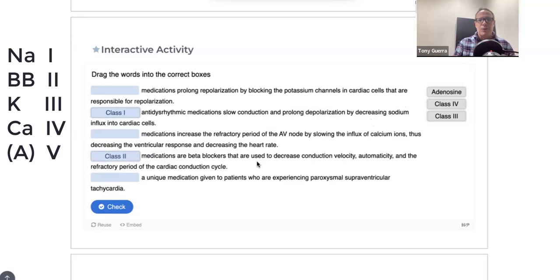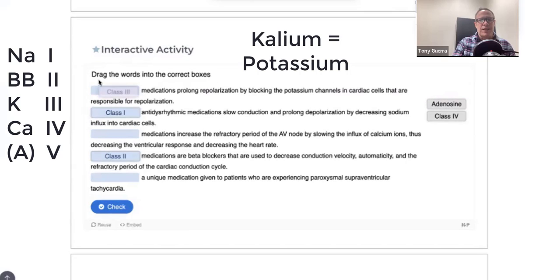Class 3 was K. So again, it's NAB-K-C-A. So a little bit tricky here because potassium, when you look at the periodic table, it is K for kalium. It is a synonym for potassium. The potassium comes from pot ash. So let's put that Class 3 there. Medications prolong repolarization by blocking the potassium channels in cardiac cells that are responsible for repolarization.